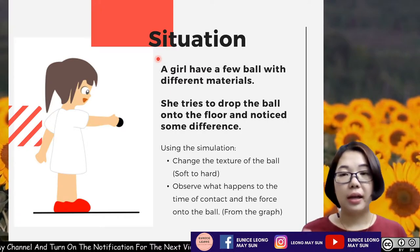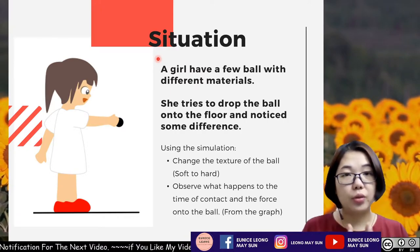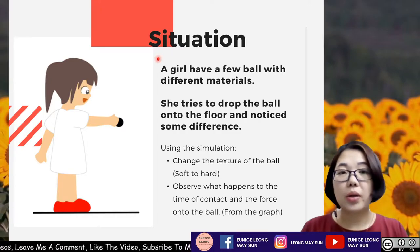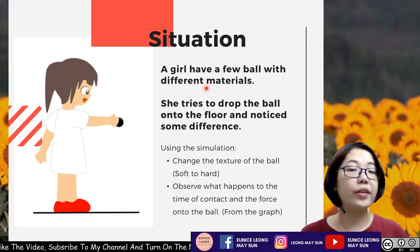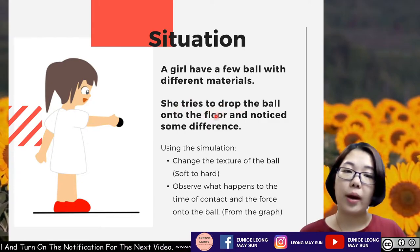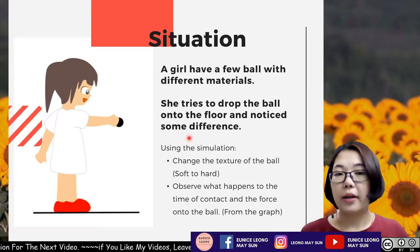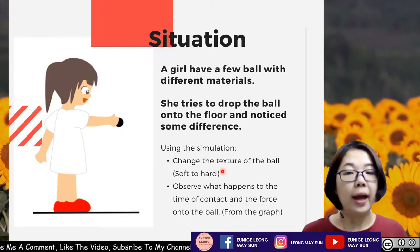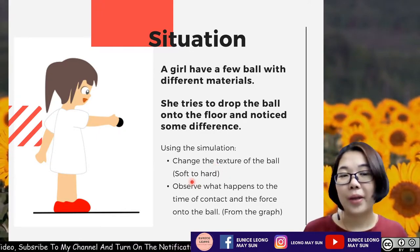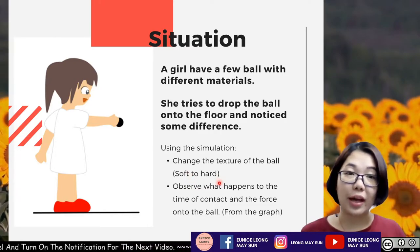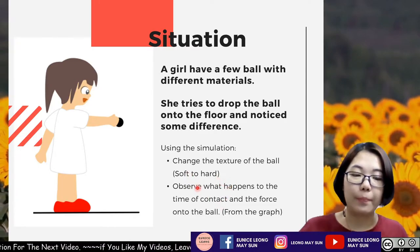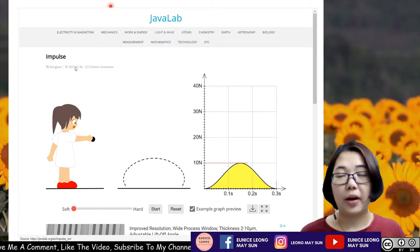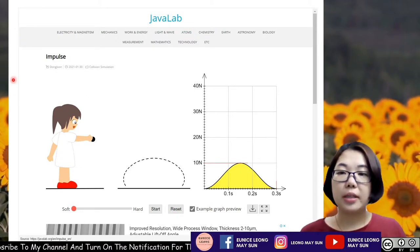Now let's consider the time in contact and the force causing the change in momentum. A girl has a ball with different materials. She drops the ball onto the floor and notices a difference. We will use a simulation to change the texture of the ball from soft to hard material and observe what happens to the time of contact and the reaction force exerted by the floor onto the ball. This simulation is from Java Lab, created by Dong Jun.